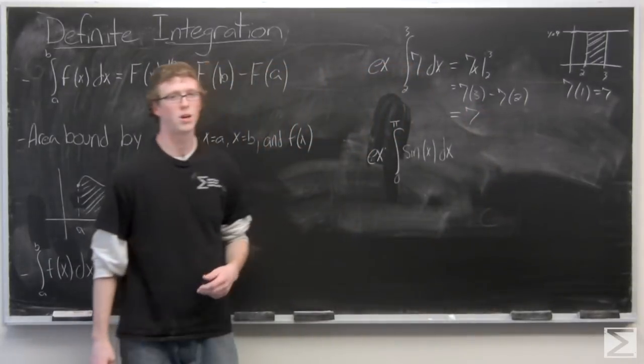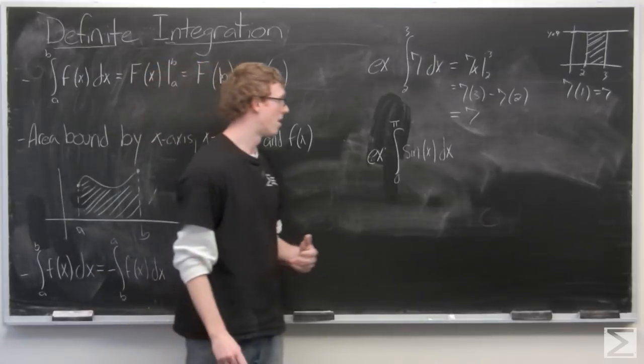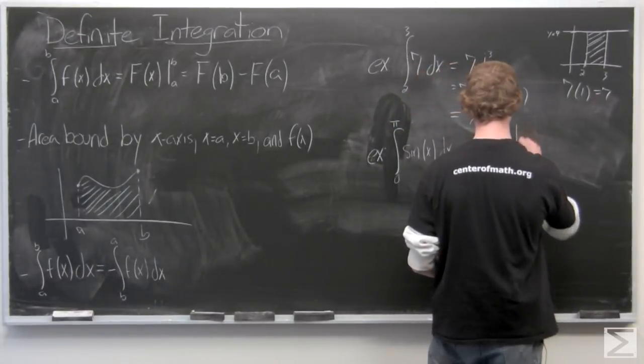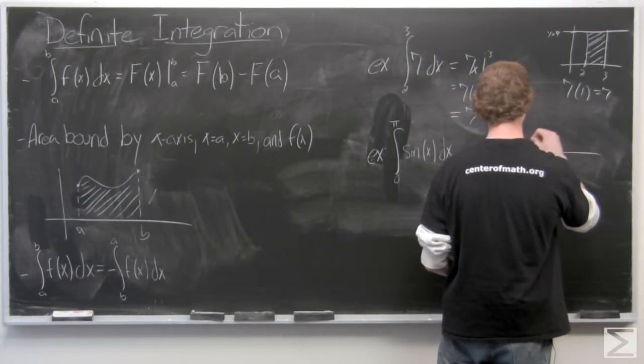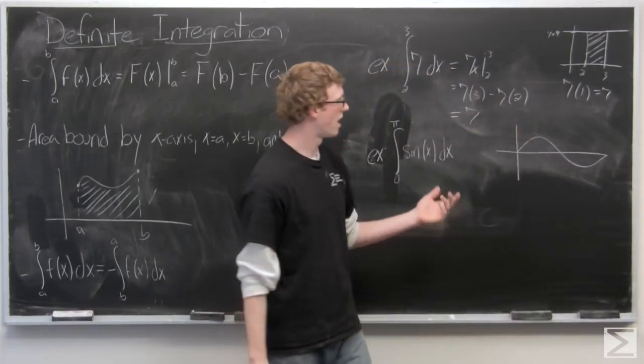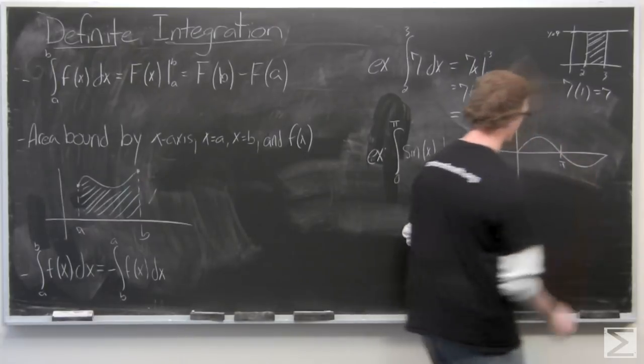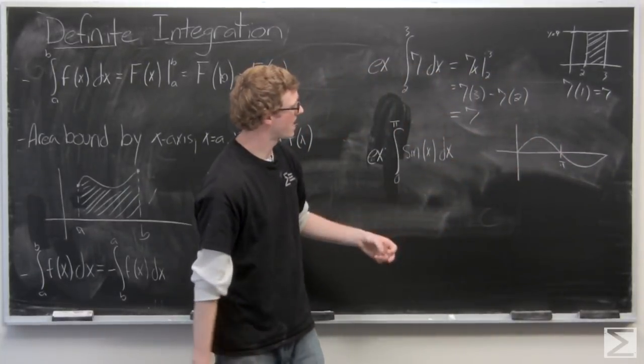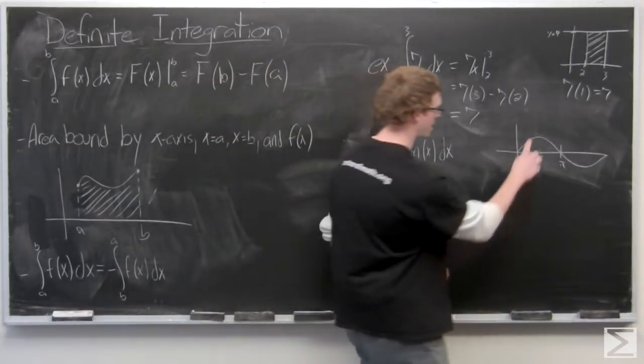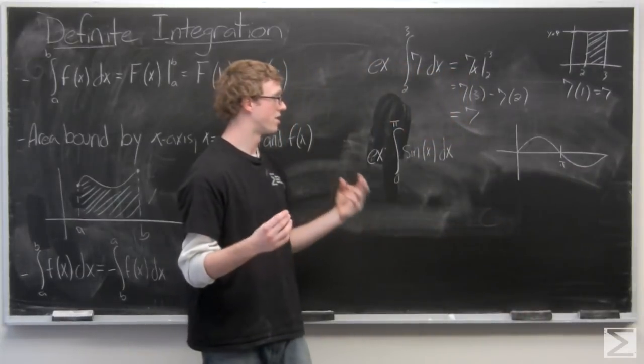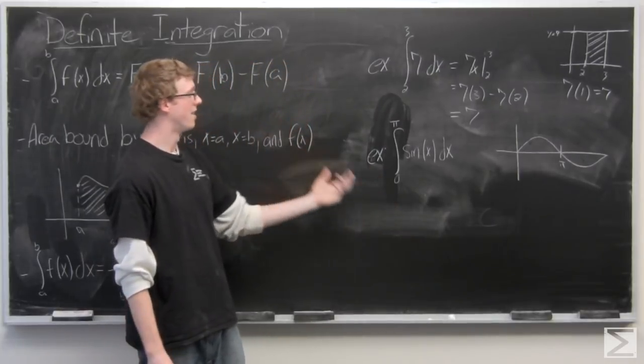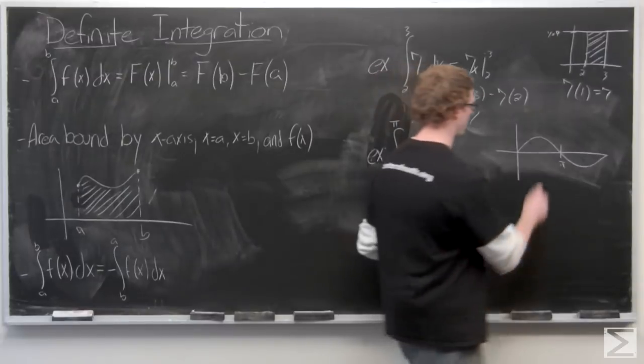So now we have a little more complicated function, sine of x. I'll go ahead and draw out the graph of this so we can see the area that we're looking for. Now, sine of x is a periodic function. So if we were to take the integral of sine of x from 0 to 2 pi, we would have this area plus this area. Those two areas are the same, except this is opposite because it's below the x-axis. So if we were to take this integral from 0 to 2 pi, this would simply be 0. But instead, we're just looking for this area.